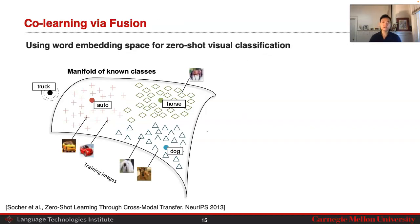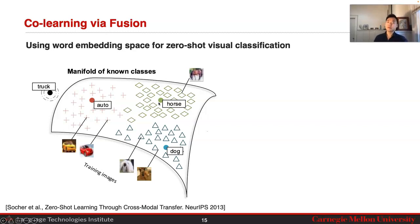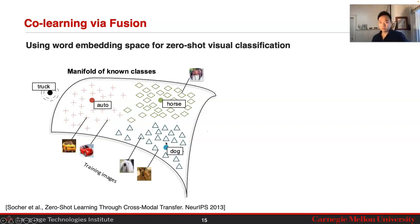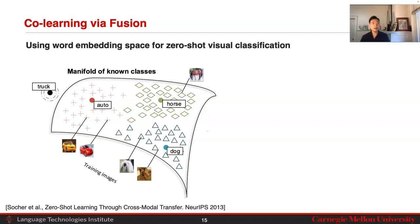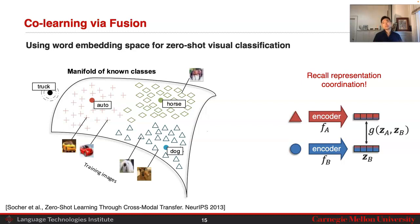In co-learning via fusion, one initial approach used word embedding spaces to help perform visual classification with low-resource data. The core idea is to learn a common embedding space between images and text where they lie on the same manifold — for example, a centroid for the word 'horse' with nearby image embeddings of horses, the word 'dog' as a cluster center for dog images, and 'auto' as a cluster center for car images. This is achieved by encoding both data modalities into representation spaces and coordinating them using a similarity function.